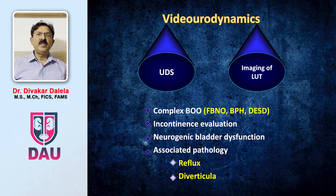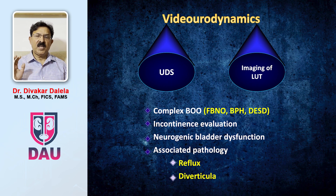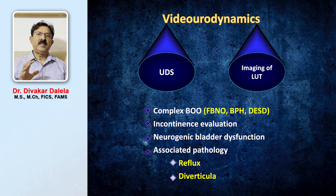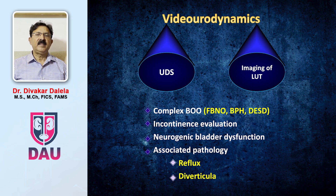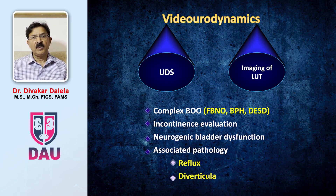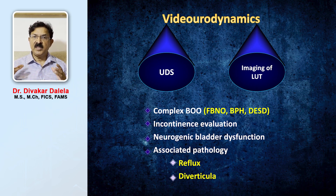In some patients you need a video urodynamic study, which means that during the urodynamic study you attach a C-arm image intensifier and instead of saline in the bladder, you fill contrast into the urinary bladder. You observe the act of contraction, the opening of the bladder outlet, and the funneling of the bladder neck on the C-arm, combining both pictures. This study is required in patients with complex bladder outflow obstruction such as primary bladder neck obstruction in women and men, patients with detrusor-external sphincter dyssynergia, incontinent patients who have failed surgery, patients with complex neurogenic bladder dysfunction, or if there is reflux into the upper urinary tract or a diverticulum.